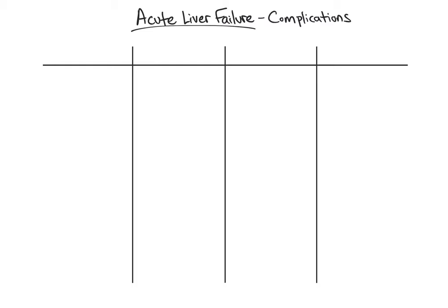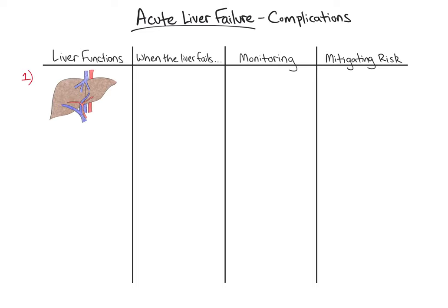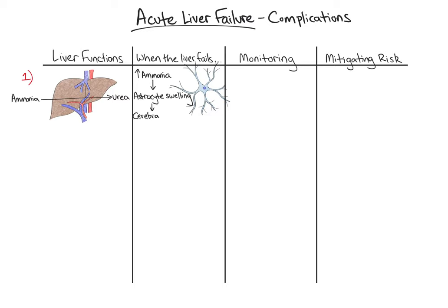We will use this table to identify the major functions of the liver, what happens when the liver fails, how we monitor for potential complications, and interventions to mitigate risk. First, the liver converts ammonia into urea for excretion. When the liver fails, ammonia levels increase. Ultimately, hyperammonemia leads to astrocyte swelling within the brain. If severe enough, this process leads to cerebral edema and intracranial hypertension, or ICH, and ultimately herniation.